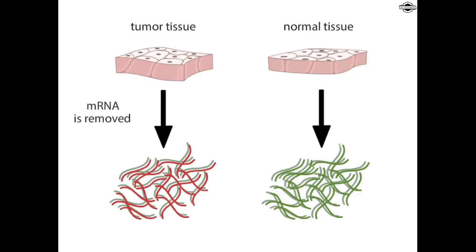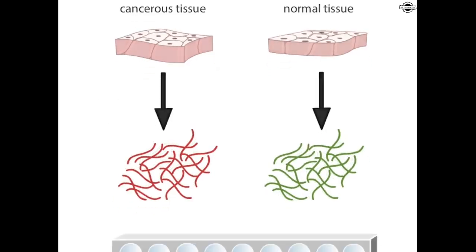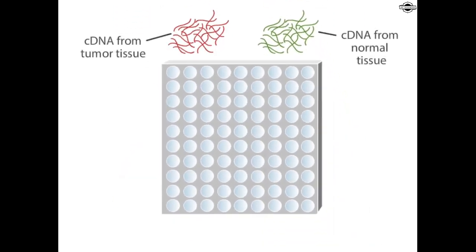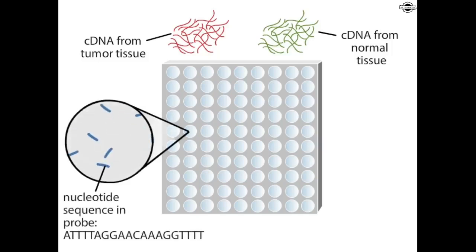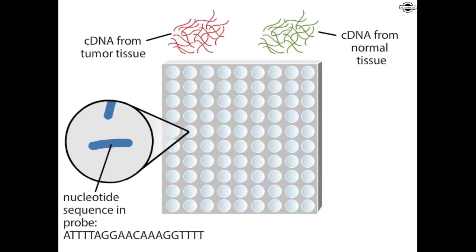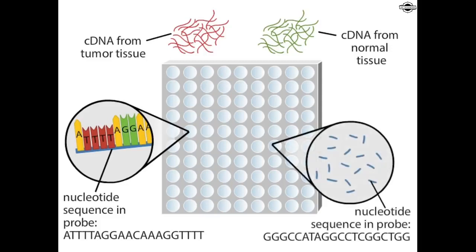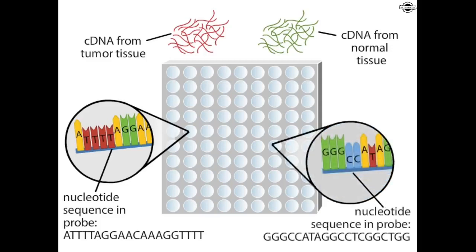After the RNA is removed, DNA microarrays are used to compare the two cDNA samples. DNA microarrays can contain 60,000 or more different DNA sequences attached in microscopic spots to a glass slide. The different DNA sequences are oligonucleotides of about 20 bases in length, representing tiny but unique regions of genes in the genome.